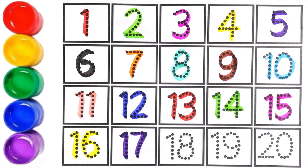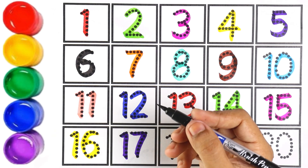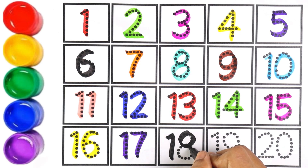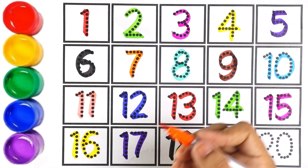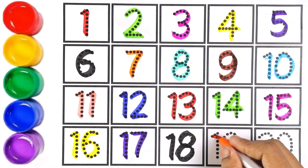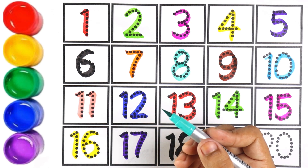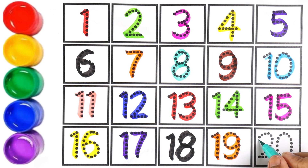Black color — number sixteen. Number eighteen: one and eight makes the number eighteen. Orange color — number nineteen. One and nine makes the number nineteen. Light blue color — number twenty.